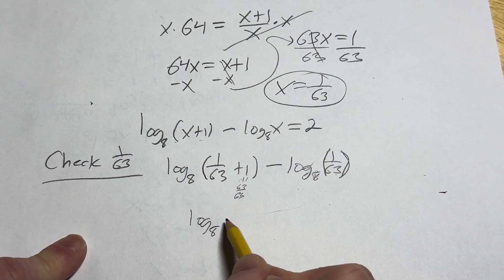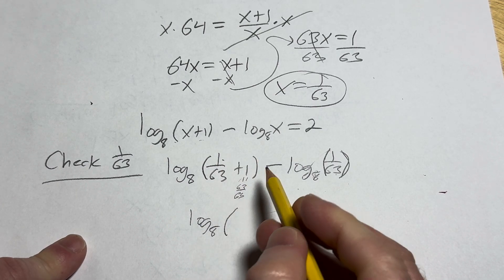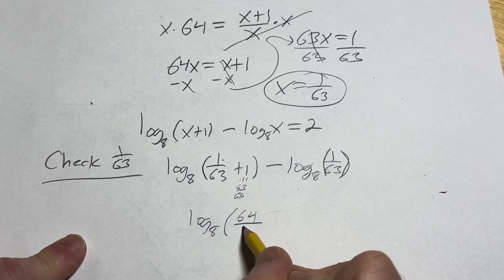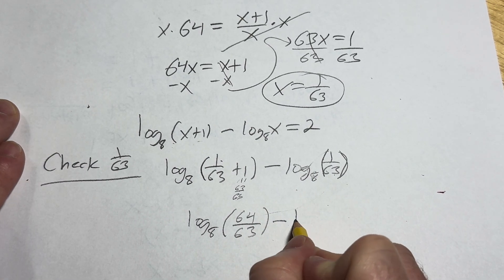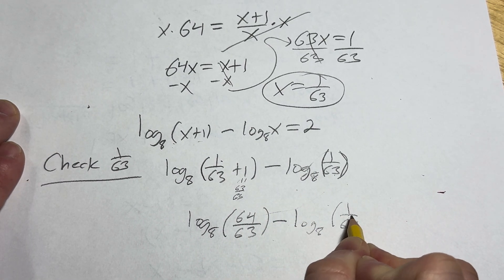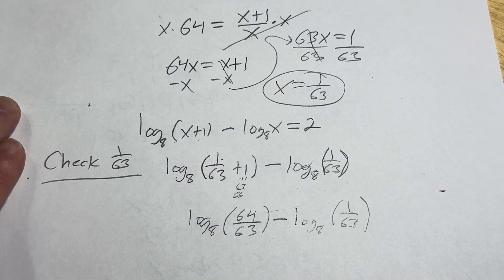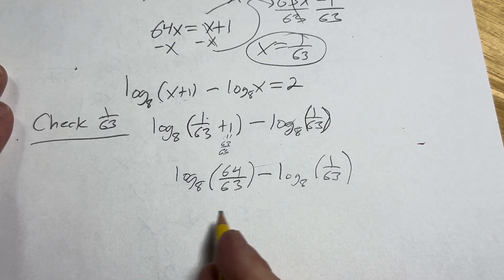So this is log base 8 of 1 plus 63 is 64 over 63 minus, and then here we have log base 8 of 1 over 63. Okay. Let's continue. So now we can apply the quotient rule.